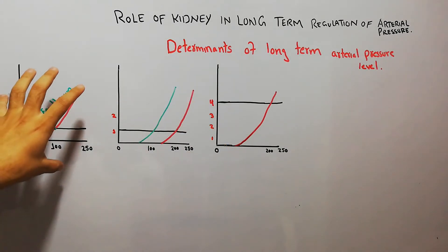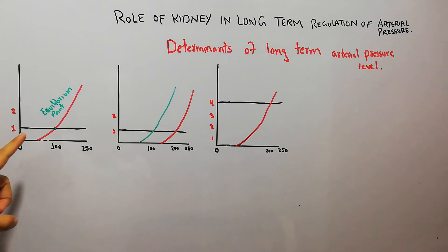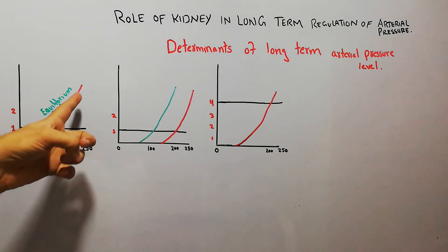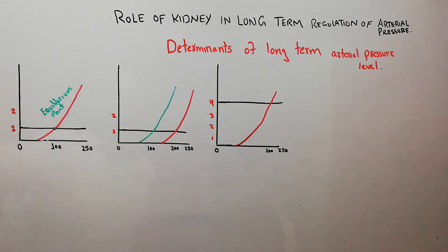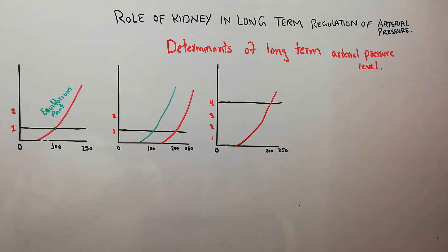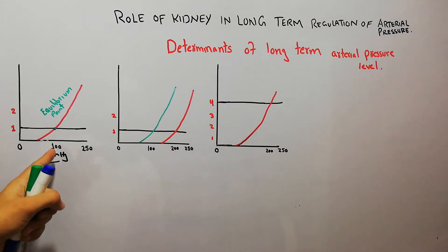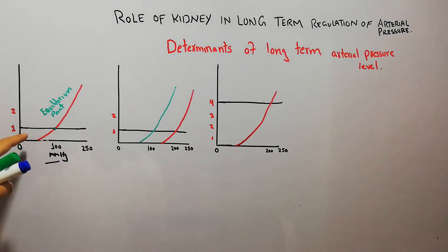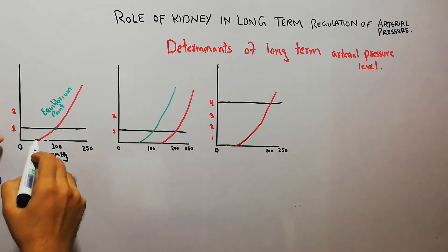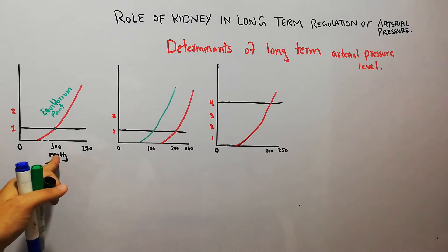To discuss the determinants we will have to recap our previous lecture, which was basically about infinite feedback gain. In the previous lecture we discussed that if we draw a graph of renal output versus salt and water intake, we see an equilibrium point at around 100 mmHg where the intake of salt and water and the renal output are equal and balance each other. In normal circumstances, the arterial pressure of the human body is 100 mmHg.